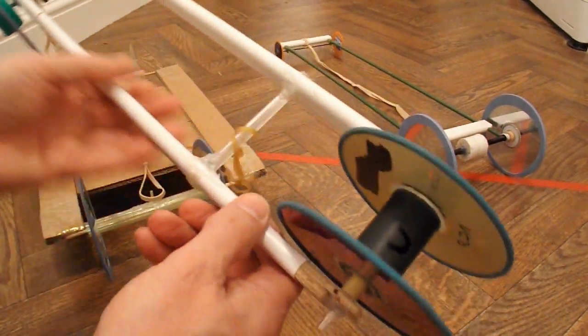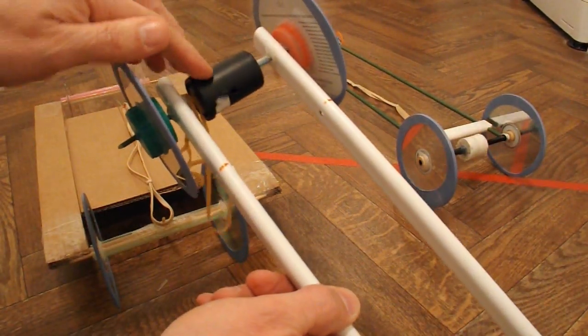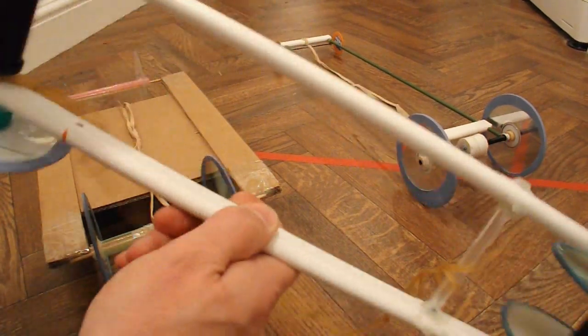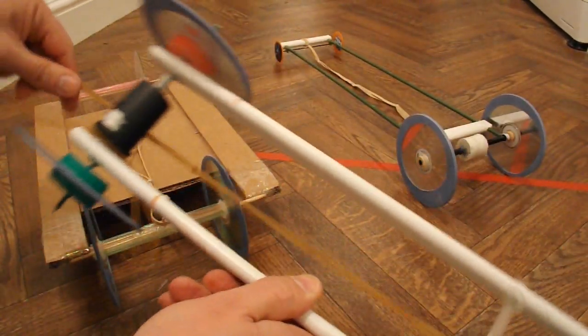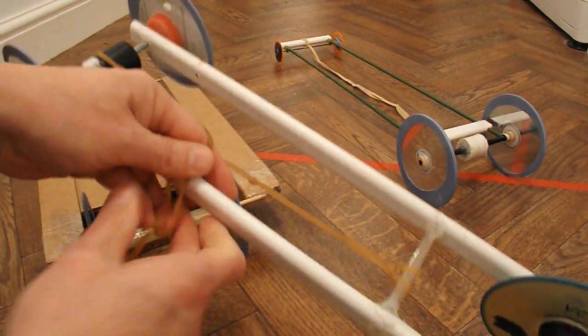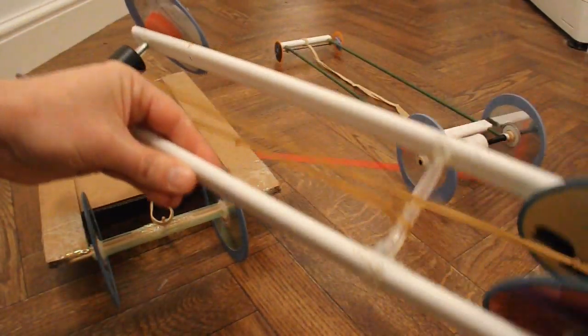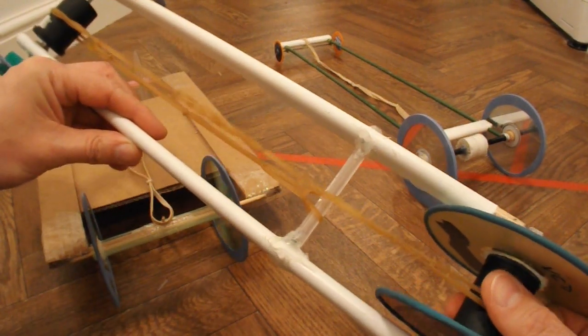The other feature of number one was it had another canister at the front, so that the rubber band starts near the back, goes over the front canister, and back to the back axle.